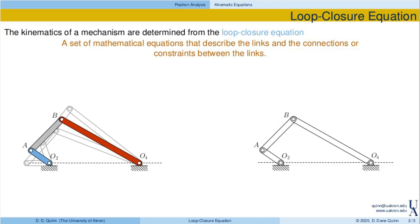That's a set of mathematical equations that describe the links — here we have a four-bar linkage — so it would describe the four links in blue, gray, red, and then of course the ground link, the connections between those links, so the fact that for example this blue link is pinned to the gray link, and the constraints of the system, such as the fact that the gray link has a fixed length. This loop closure equation seeks to capture that. In particular, we identify what we refer to as independent closed kinematic chains.